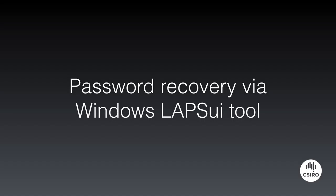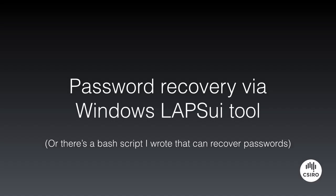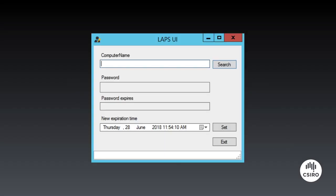Password recovery is via a Windows LAPS UI tool that Microsoft released — it's fairly basic. I did write a bash script that does the exact same thing, so if you want to do it in the terminal, it's available on my GitHub. There is a minor issue with the LAPS UI: the font it uses to render the password can make some characters look like others — for example, capital I and lowercase L look exactly the same. Internally in CSIRO we mainly use a different tool we developed to mitigate against that, and we've made that tool available to our staff via an internal website so they can access it on their phones if they need to.